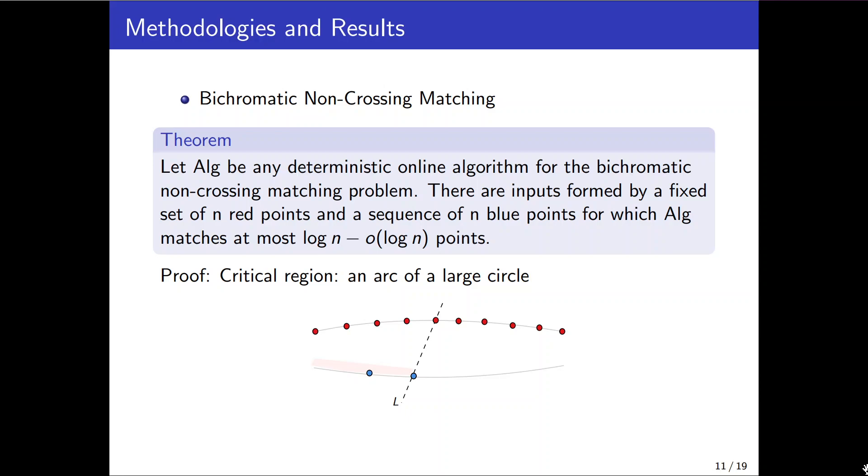Which includes less than the half of their red points. Hence each time the number of potential red points decreases by a factor of at least 2.